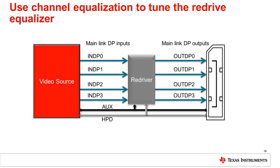DisplayPort requires a high-speed interface to support high-resolution video. Maintaining signal integrity for these high-speed signals over the transmission media is very important but also quite challenging. A re-driver or re-timer placed on the main link between the source and the connector, or between the connector and the sink, can help alleviate some high-speed design limitations. For more detail on signal conditioners, please refer to the TI Precision Labs presentations 'What is a signal conditioner?' and 'What is the difference between linear and limited re-driver?'